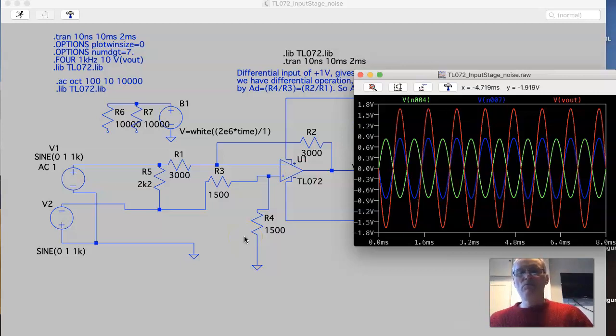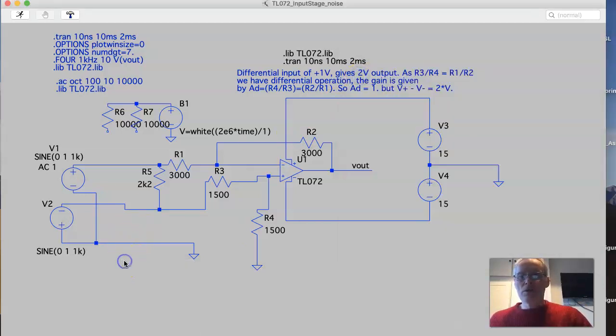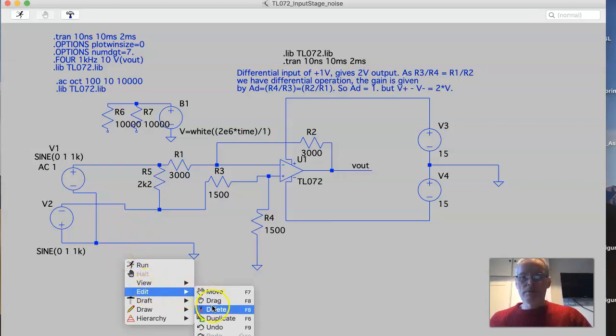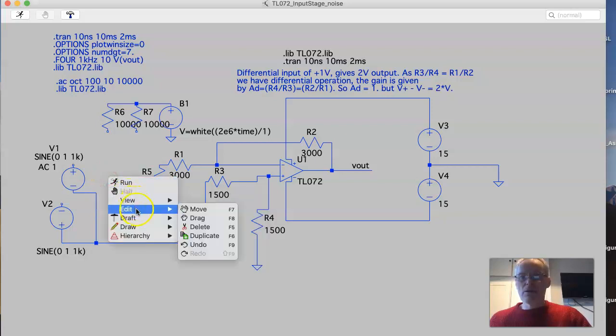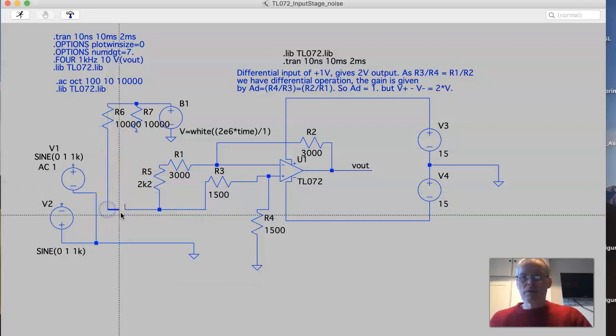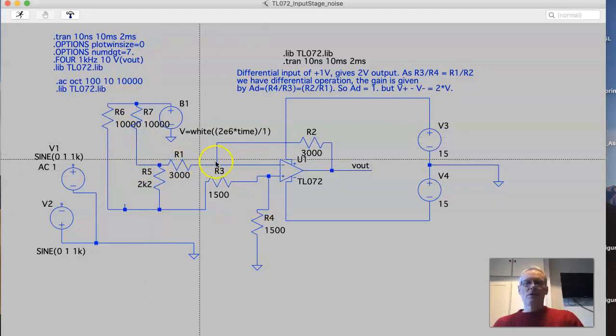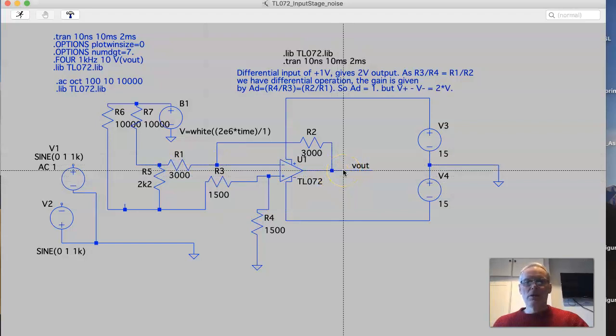So whilst we've kind of balanced up the differential inputs, if we go back to the noise, disconnect that, disconnect that and reconnect the noise sources, let's have a little look at what that might give us. These two equal 3k, we saw pretty much 4 millivolts peak to peak noise. So if we run this again, what do we get now?